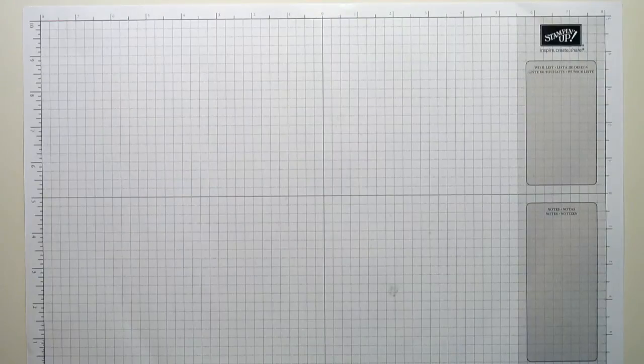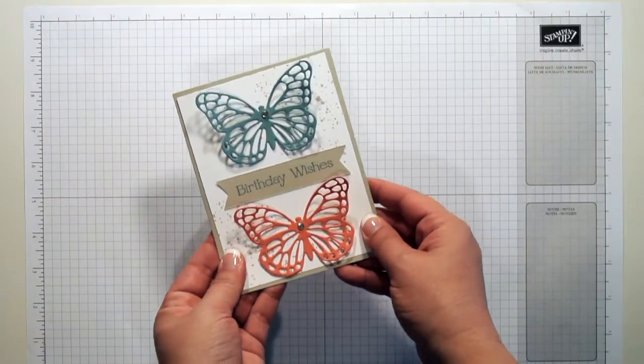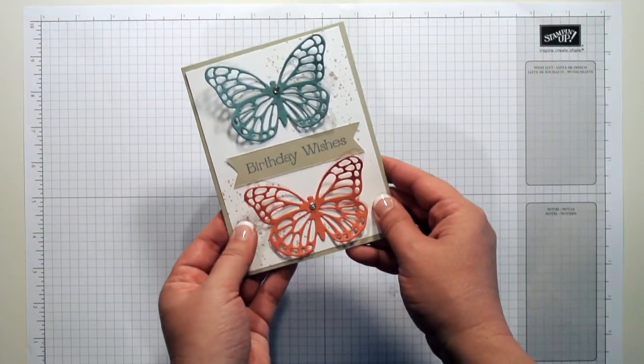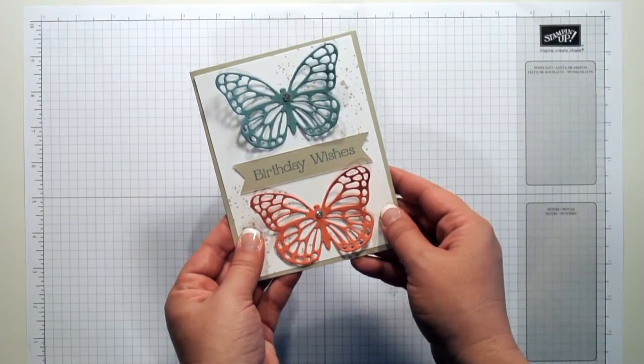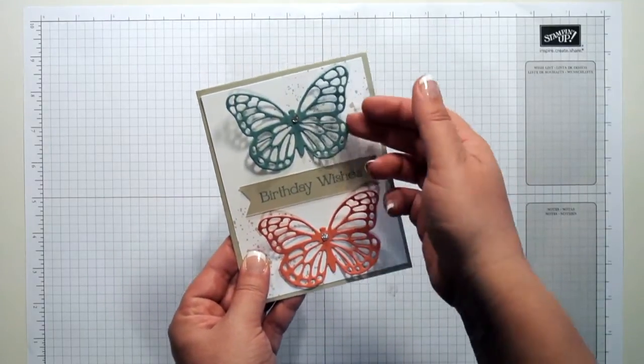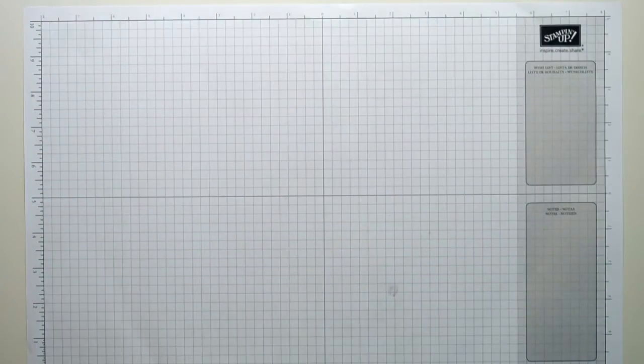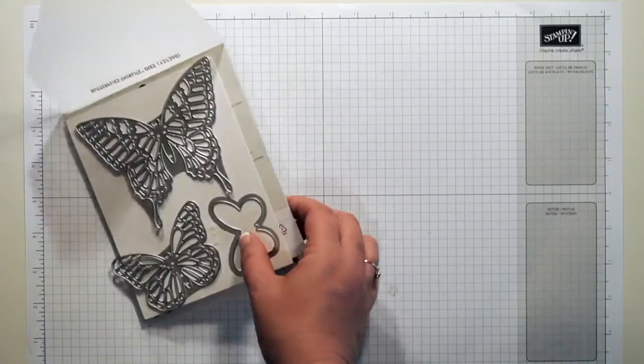Hey everyone, it's Carrie from Carrie's Crafts, and today I want to show you how I made this beautiful card using some of the new butterfly thinlit dies from the occasions catalog. Aren't they great? I just love those. We're going to be using the butterfly thinlit dies.